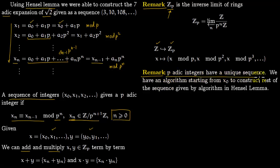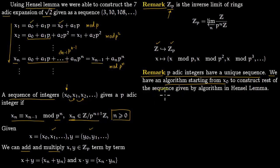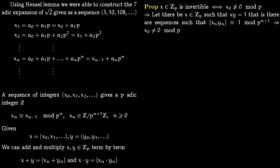An important remark: p-adic integers have a unique sequence. This is precisely because once you fix x₀, you follow Hensel's lemma step by step to find x₁, x₂, x₃, and so on. There is a fixed algorithm to find the next step inductively. We have already done this for the expansion of √2 using the 7-adic expansion: you fix the first term and the rest follow.